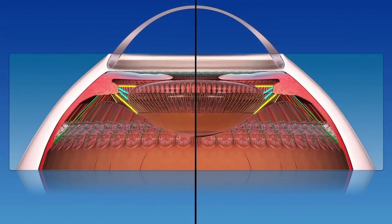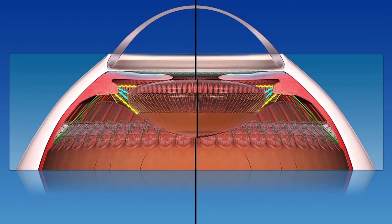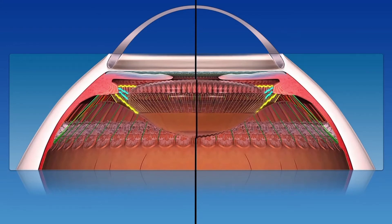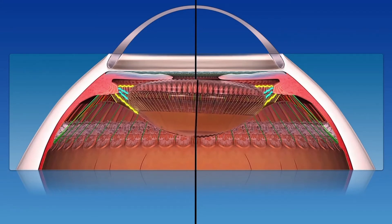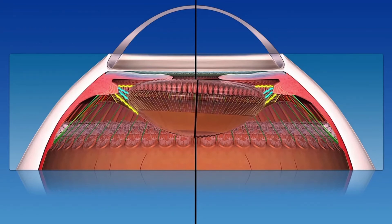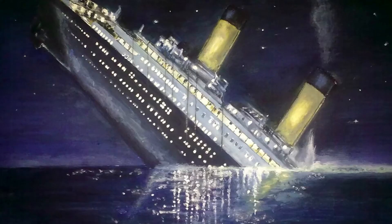What if all the zonules on your lens become weak? Then surely the surgical scenario does become bleak. It's the right time to stay calm and not panic, because the lens is sinking — Titanic.